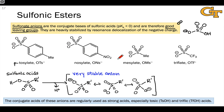I wanted to briefly mention the sulfonic acids — the conjugate acids of each of these anions — because you'll see them used on a regular basis as strong acids in organic reactions. So let's label those above.